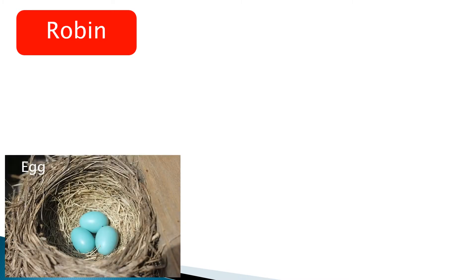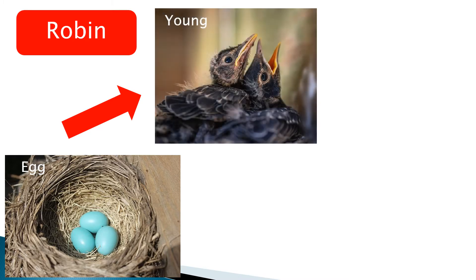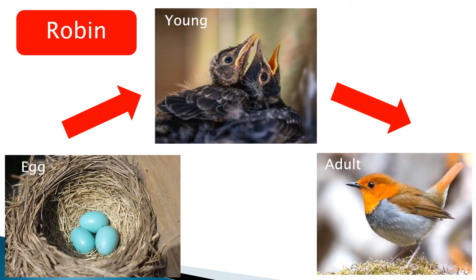In this life cycle, robins have laid their eggs in a nest. The eggs will hatch and their young will begin to grow. They will grow into adults and when these adults are ready they will lay their own eggs and the life cycle will begin again.